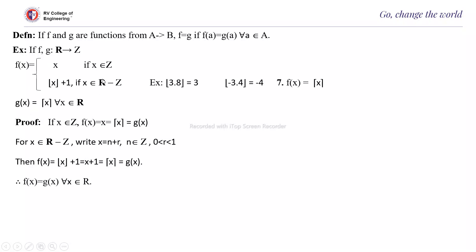If x is not an integer, we write x = n + r where n ∈ Z and 0 < r < 1. Then f(x) = floor(x) + 1 = n + 1, which equals ceil(x) = g(x). For example, floor(3.8) = 3 while floor(-3.4) = -4. Therefore f(x) = g(x) for all x ∈ R.